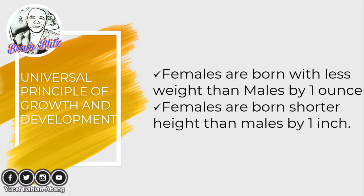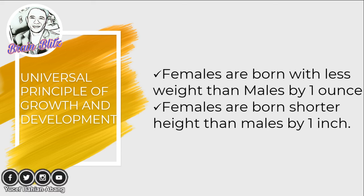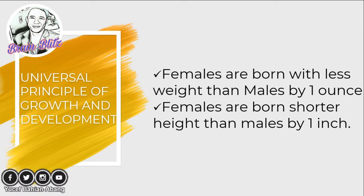Universal principles of growth and development note that females are born with less weight than males and are born shorter in height than males by one inch. Therefore, males are bigger and taller, while females are thinner and shorter at birth.